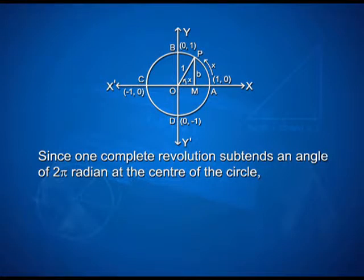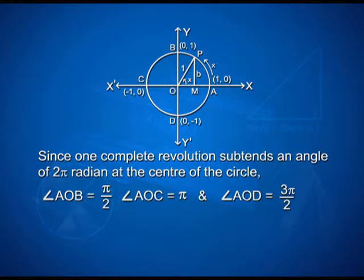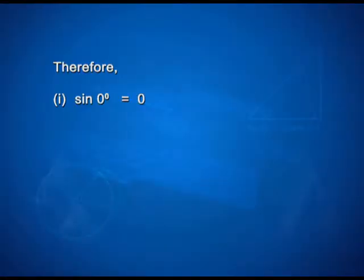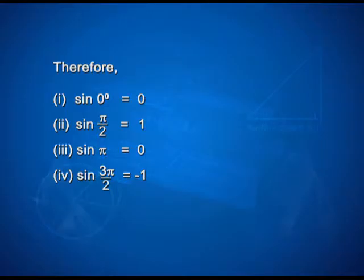Since one complete revolution subtends an angle of 2π radian at the center of the circle, angle AOB is equal to π/2, angle AOC is equal to π, and angle AOD is equal to 3π/2. The coordinates of the points A, B, C and D are respectively given. Therefore, we have sin 0 = 0, sin π/2 = 1, sin π = 0, sin 3π/2 = −1, and sin 2π = 0.